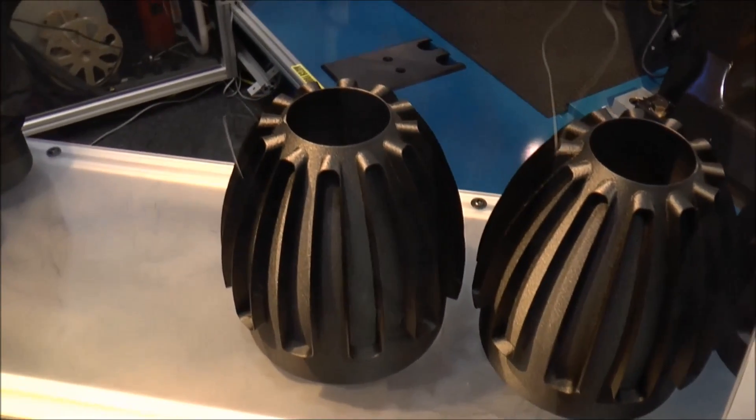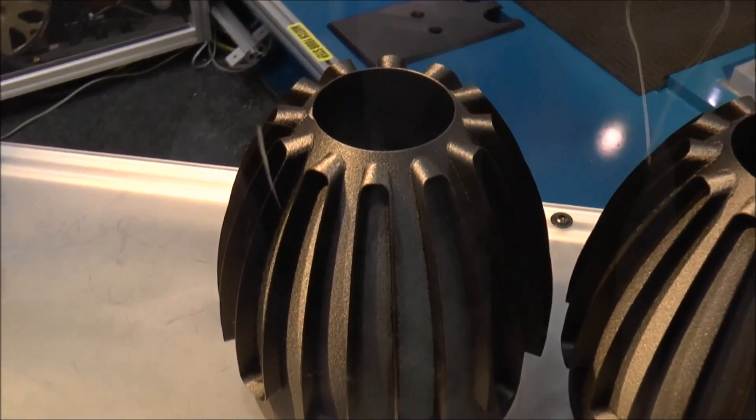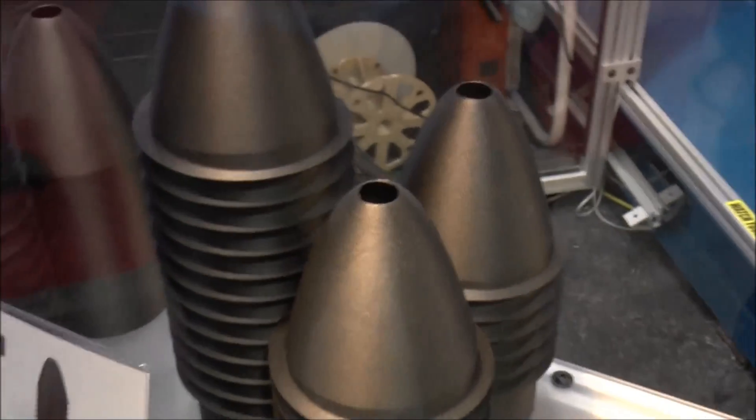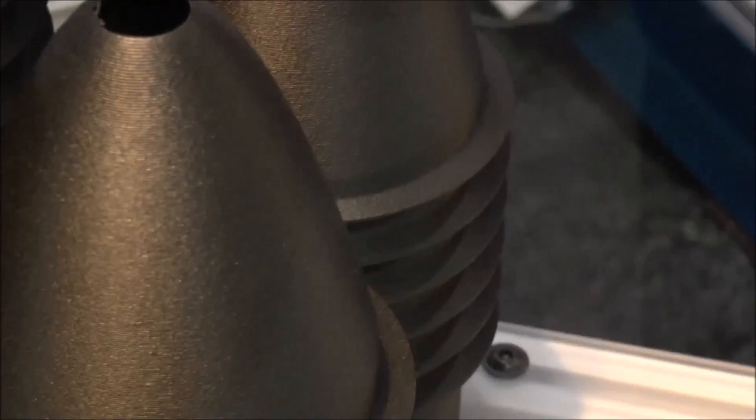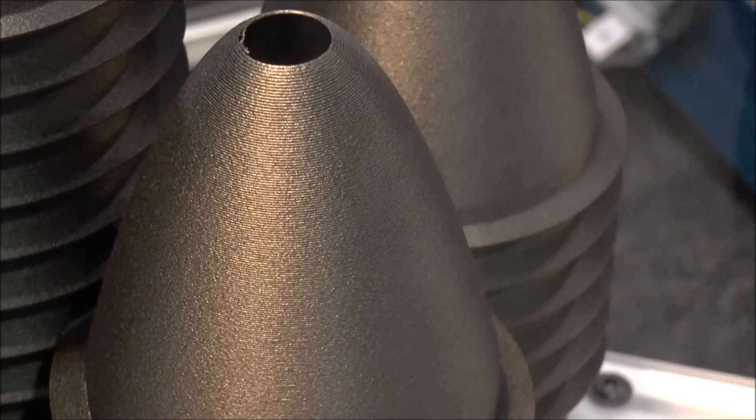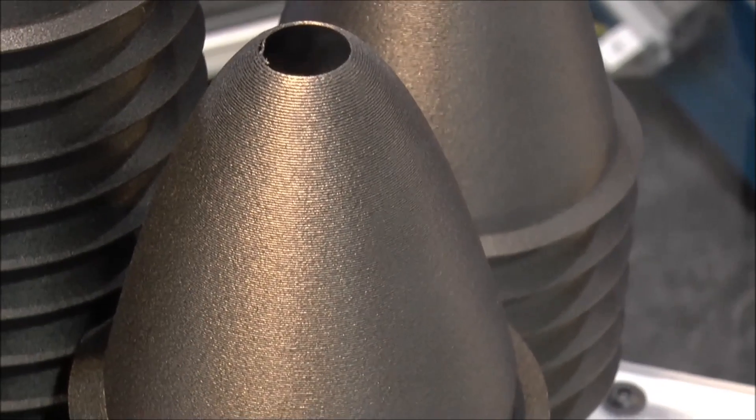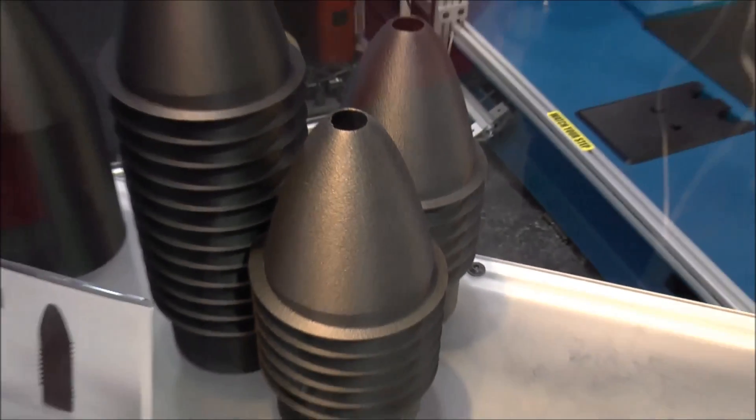On the left here you've got what we're calling a composite auger. It's a notional design really designed to show off the capabilities of multi-axis robotic deposition. This auger is built in a traditional two-and-a-half D single tool path helical tool path.